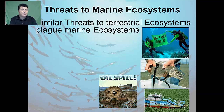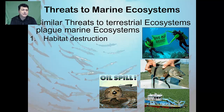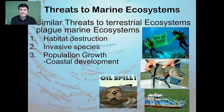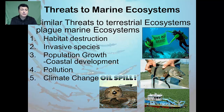The reason for this decrease in biodiversity is similar to the reason why terrestrial biodiversity is decreasing: habitat destruction, invasive species, population growth of humans, pollution, climate change, and over harvesting.